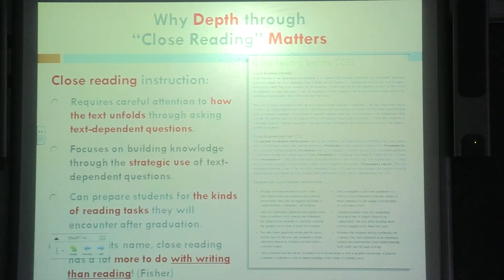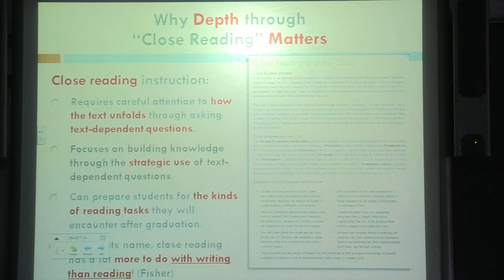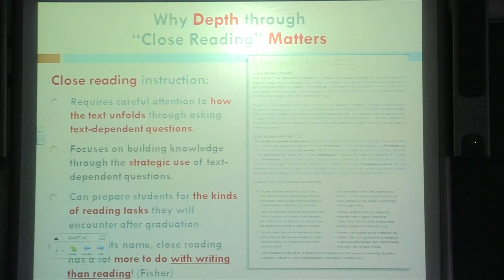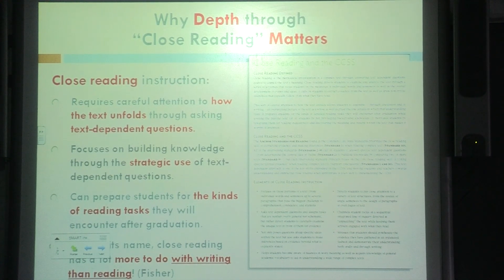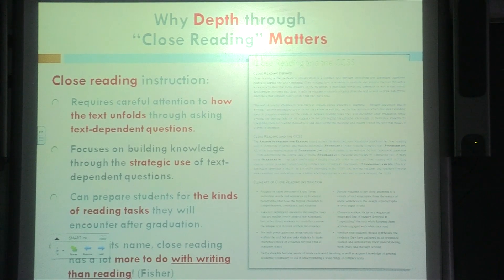We also want to be very strategic as teachers when we use text-dependent questions to lead students to success and push them to deeper levels of thinking. We want to look at the kinds of reading tasks students are going to have after they graduate — things they're going to encounter in the real world. With text-dependent questions, we're really having students read like writers or read like detectives, looking not just at what the text says, but why did the author make the choices they made — why did they choose a particular picture, graphic, or writing style?